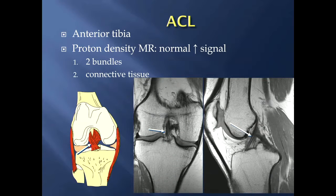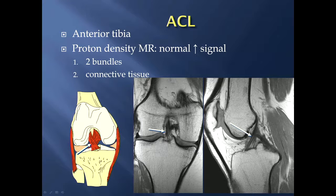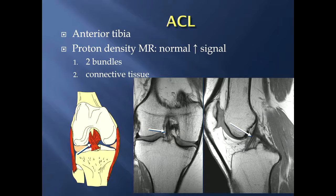Starting with the ACL, it's called the anterior cruciate ligament because it's positioned more anteriorly. Notice on the sagittal proton density image that the majority of the ligament is anterior to the PCL, and for its insertion onto the anterior portion of the tibia. On a proton density MR image — one of the most common pulse sequences in MR of the knee — it normally has increased signal within it, mostly these striations, and that is due to two reasons.